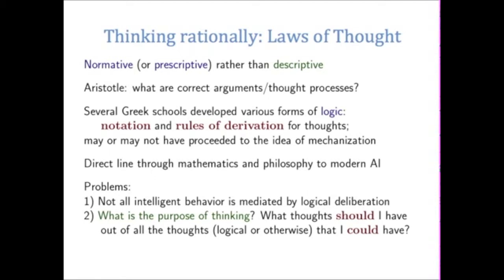Let's turn from the cognitive side — where we try to get computers to model humans — to the rational side, where we try to get computers to behave as ideally rational as possible. Here, instead of describing human behavior, we're prescribing behaviors that AI systems ought to follow. This school of thought goes back many thousands of years, beginning at least with Aristotle, in which philosophers looked at what constitutes proper logic in an argument. Several schools of Greek philosophy developed various forms of logic, including notation and rules of derivation for thoughts.